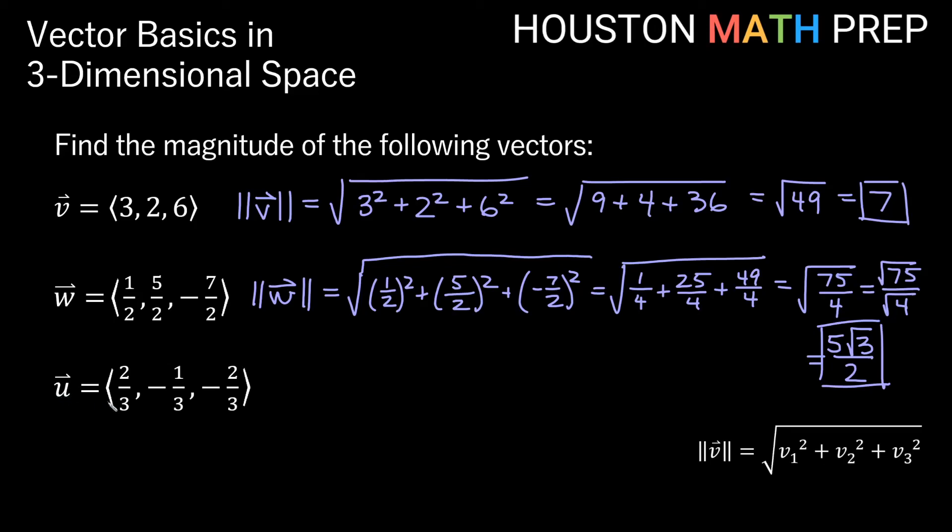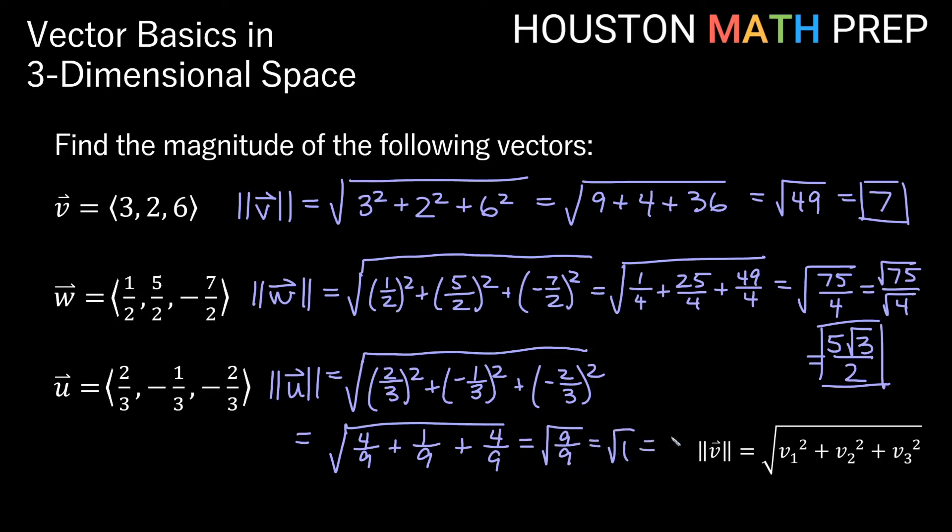Let's look at our last one here. Magnitude of vector u. Our u vector is 2 thirds, negative 1 third, negative 2 thirds. So our magnitude of vector u, in this case, we'll have the square root of 2 thirds squared, plus negative 1 third squared, plus negative 2 thirds squared. And these are all squared, so those negatives don't matter too much. So I would actually get the square root of 4 over 9, plus 1 over 9, plus 4 ninths. We get 4 ninths plus 1 ninth, plus 4 ninths. 4 plus 1 plus 4 is 9. We actually get the square root of 9 over 9, which is the square root of 1, which turns out is just 1. So the length of vector u, it turns out here, is just 1.